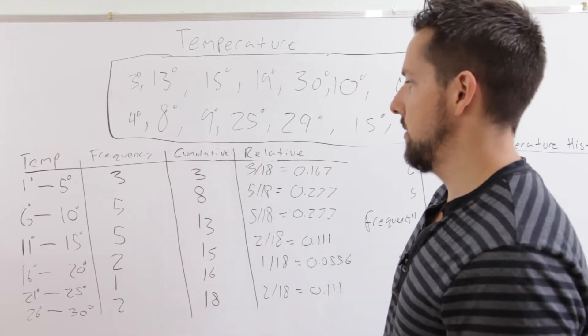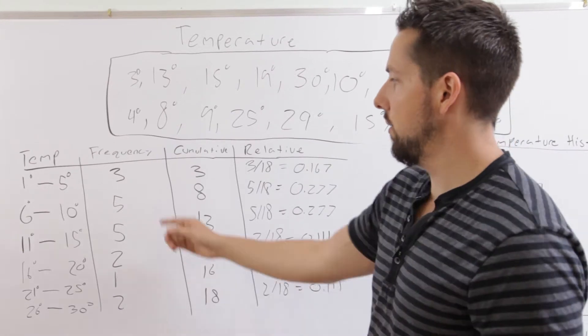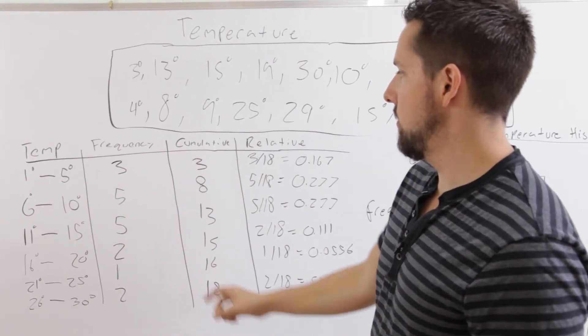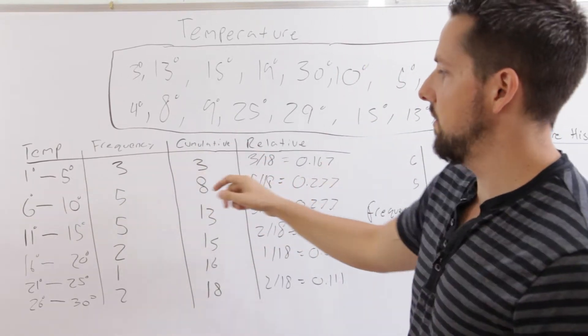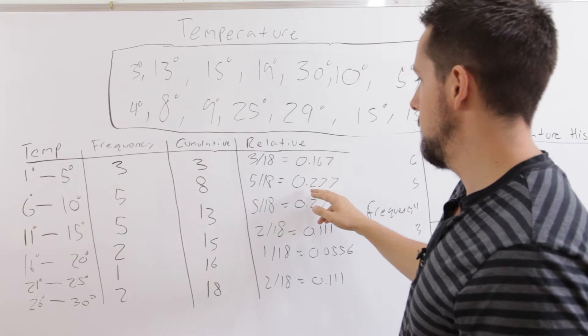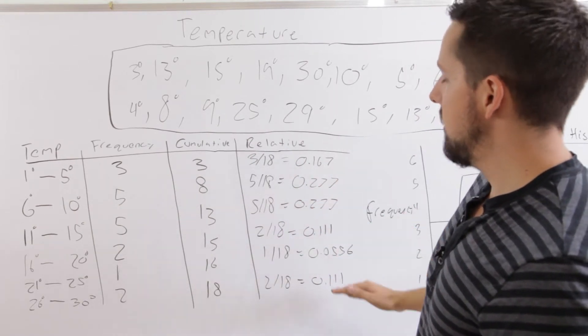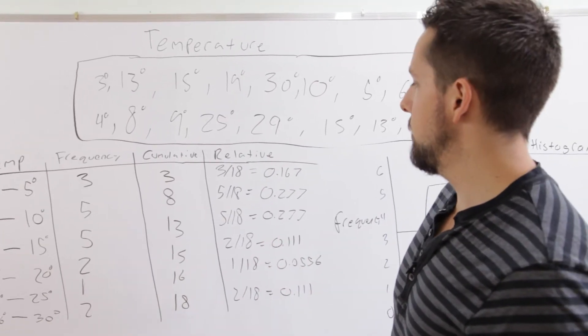Now relative frequency expresses each as a proportion of the total. Remember, you're going by frequency, not cumulative frequency when you do this. So we have three over eighteen equals 0.167. Five over eighteen is 0.277. And we keep doing that. If we add these up, it should be about one or close to one. It might be a bit over or a bit under because we were rounding.